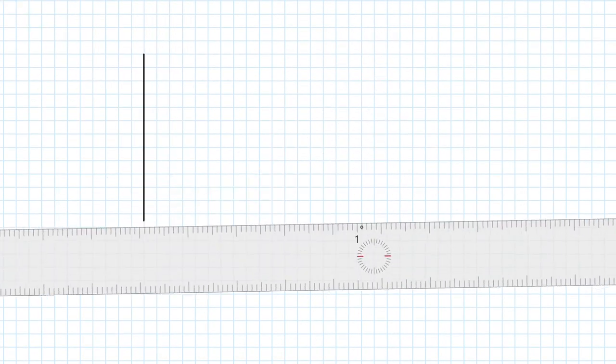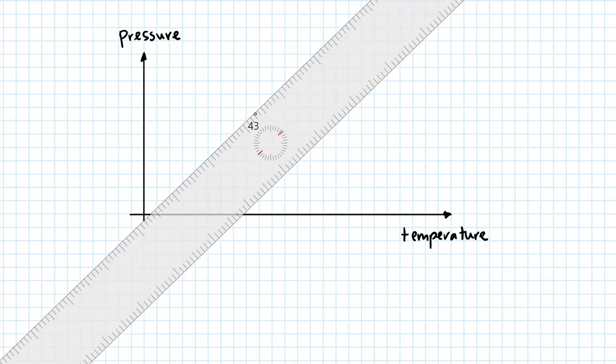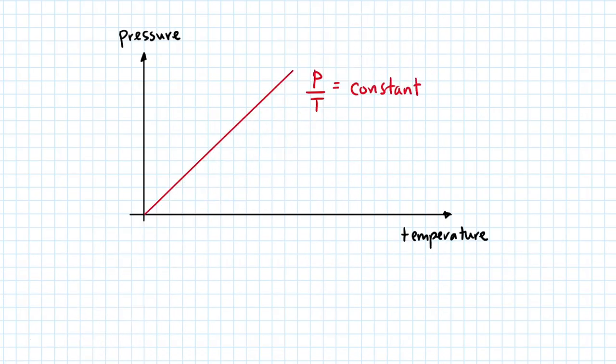To plot a graph of pressure against temperature, it's a simple linear graph to show a constant proportionality.